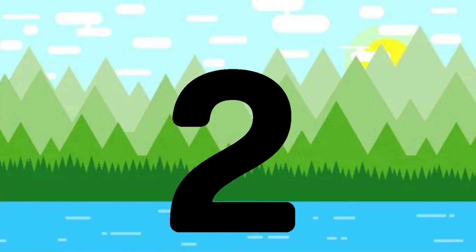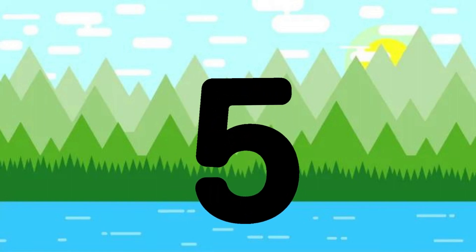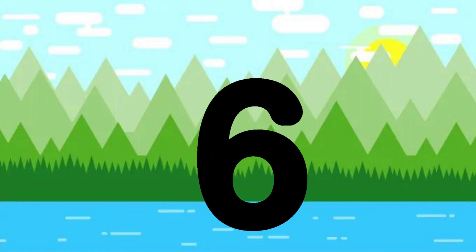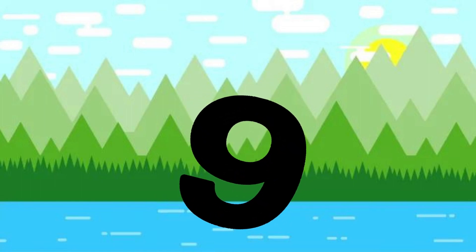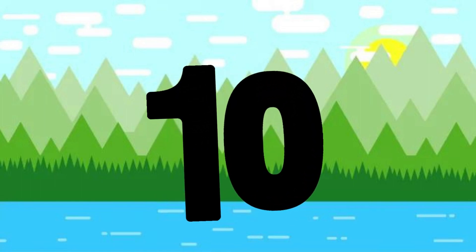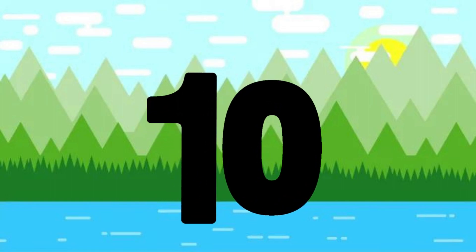One little, two little, three little numbers. Four little, five little, six little numbers. Seven little, eight little, nine little numbers. Seven little, eight little, nine little numbers. One little, two little, three little numbers. Four little, five little, six little numbers. Seven little, eight little, nine little numbers. Ten little numbers.